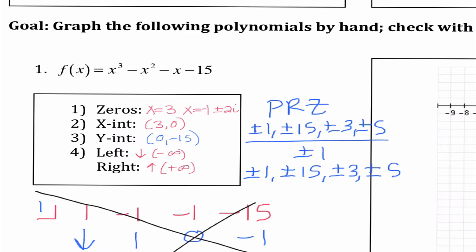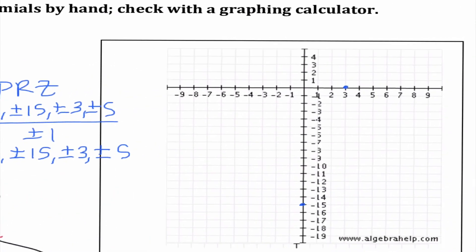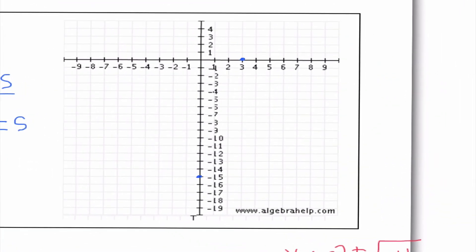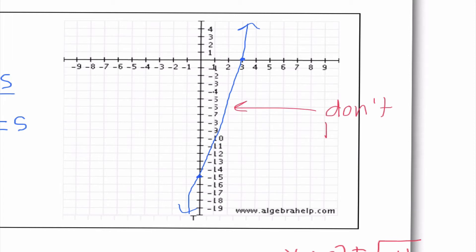When graphing this, we don't know where the minimums and maximums are, and we don't care. All I know is it's going down to the left and up to the right, and it needs to cross at negative 15 and at 3. If you graphed a little bit differently — like if you put some little squiggle in — that's fine. What I would be grading for is: is it in the right direction? Is it crossing through the correct points?